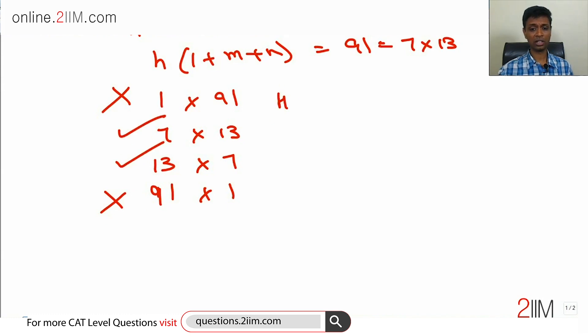Break those down. Say HCF is 7, 1 plus m plus n is 13, or m plus n is 12. Very simple. HCF is 7, 1 plus m plus n is 13, m plus n could be 12.